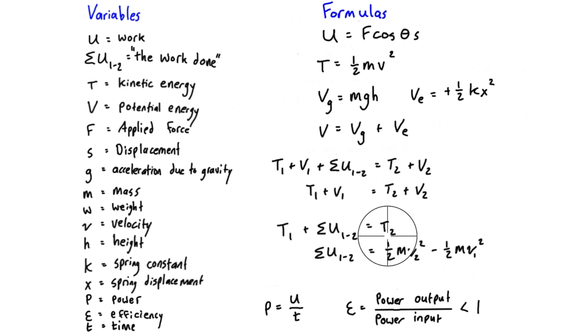The next line down here is referred to as the principle of work and energy. It's another popular formula for using in the work and energy sections. Basically it's just a simplification of the one up here, the conservation of energy equation. We've just removed V1 and V2.